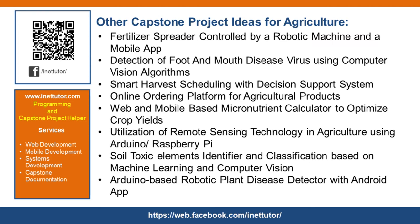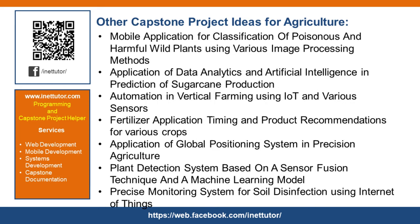Fertilizer spreader controlled by a robotic machine and a mobile app. Detection of foot and mouth disease virus using computer vision algorithms. Smart harvest scheduling with decision support system. Online ordering platform for agricultural products. Web and mobile-based micronutrient calculator to optimize crop yields. Utilization of remote sensing technology in agriculture using Arduino or Raspberry Pi. Soil toxic elements identifier and classification based on machine learning and computer vision. Arduino-based robotic plant disease detector with Android app. Mobile application for classification of poisonous and harmful wild plants using various image processing methods. Application of data analytics and artificial intelligence in prediction of sugarcane production. Automation in vertical farming using IoT and various sensors. Fertilizer application timing and product recommendations for various crops.